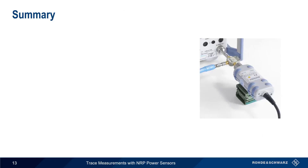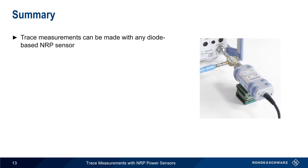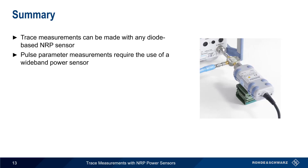Let's end with a brief summary. Simple trace measurements can be made with any diode-based NRP series power sensor, but pulse analysis, or pulse parameter measurements, require the use of a wideband power sensor such as the NRP Z8X series.